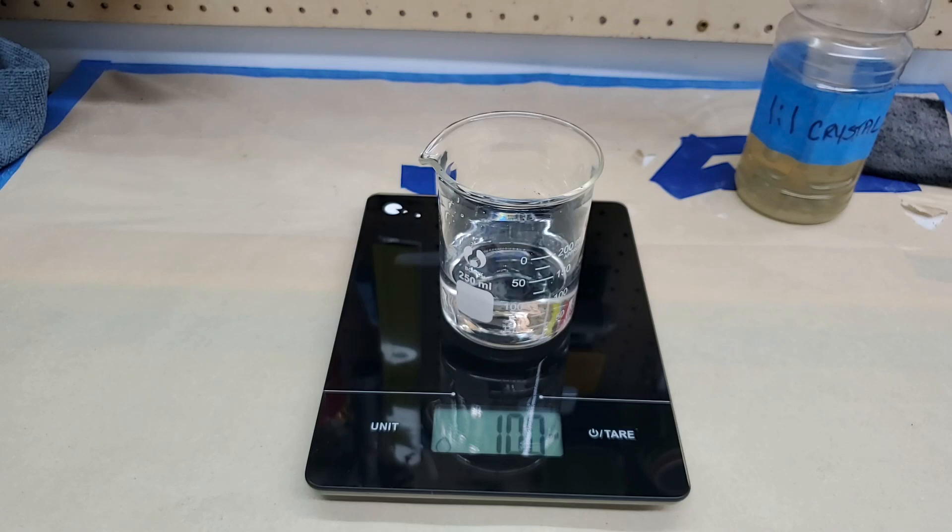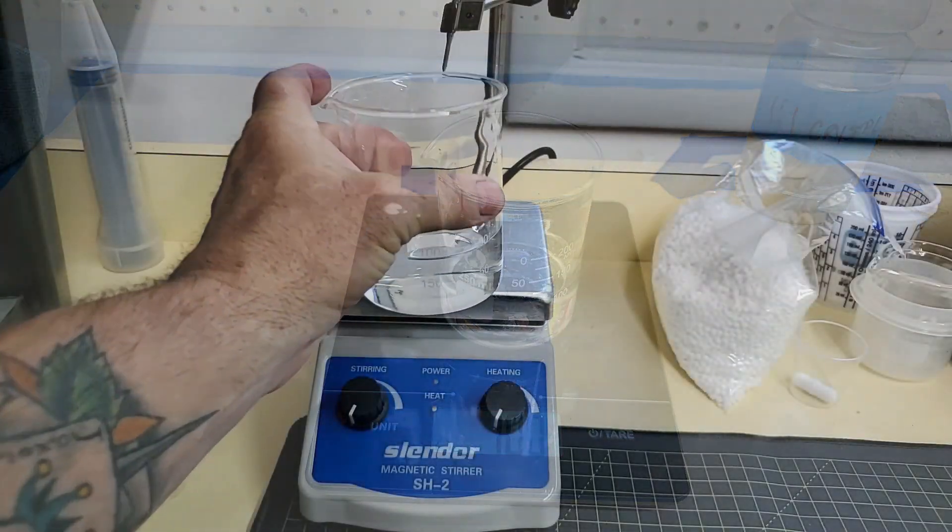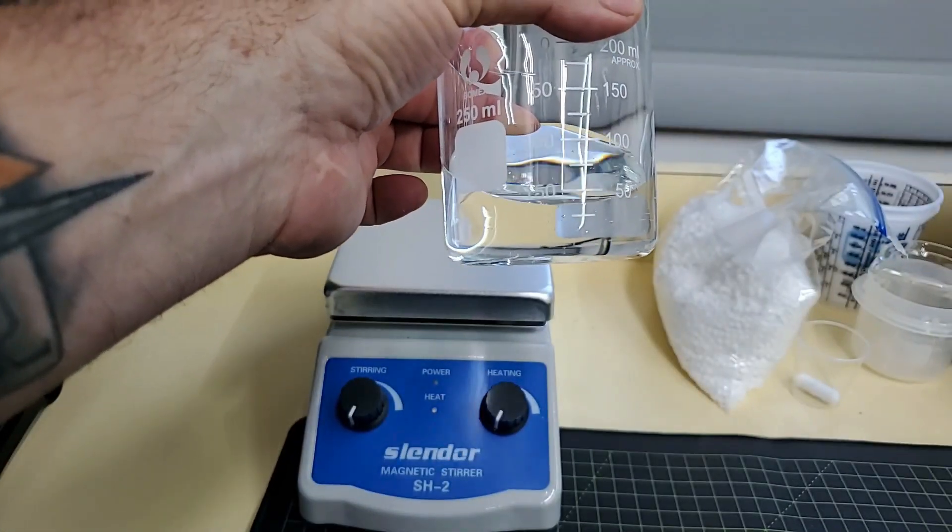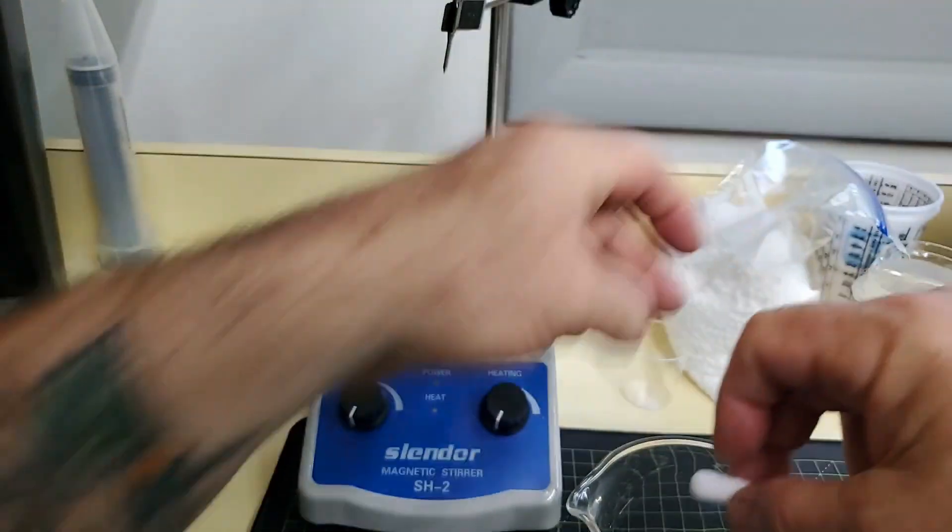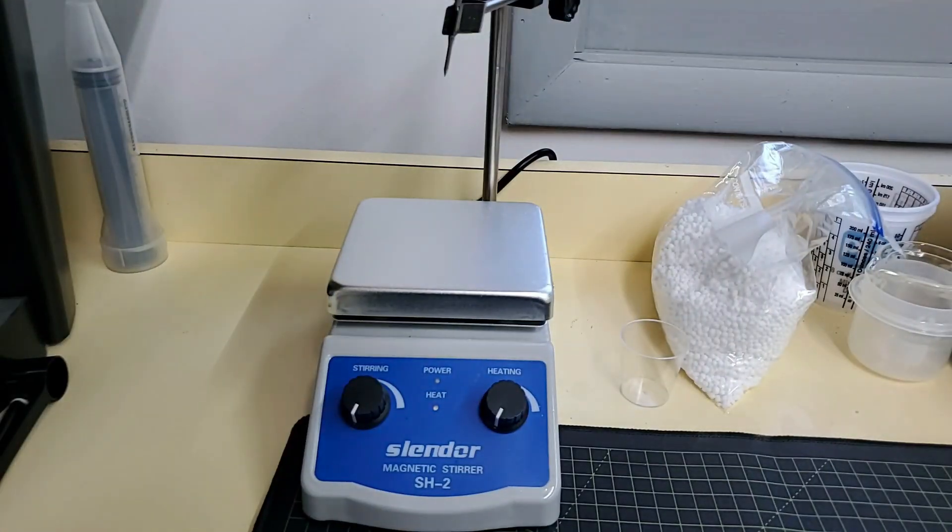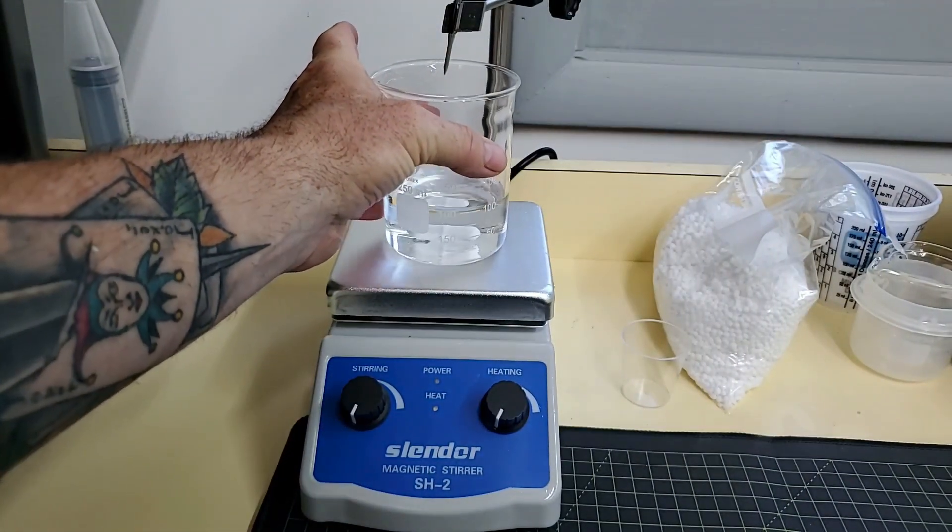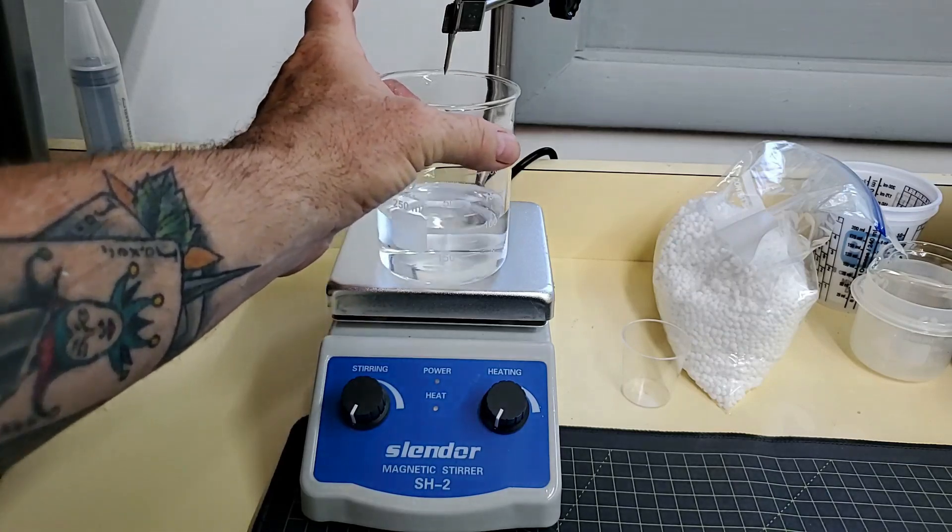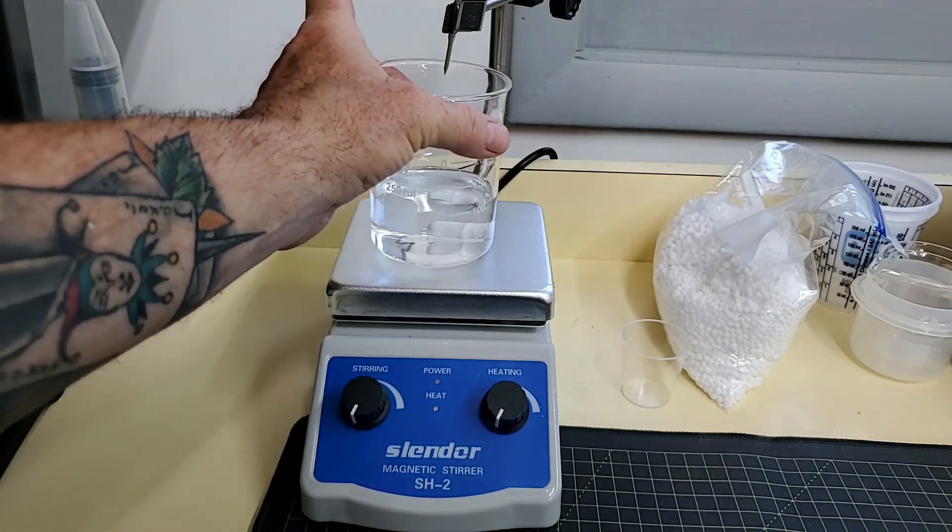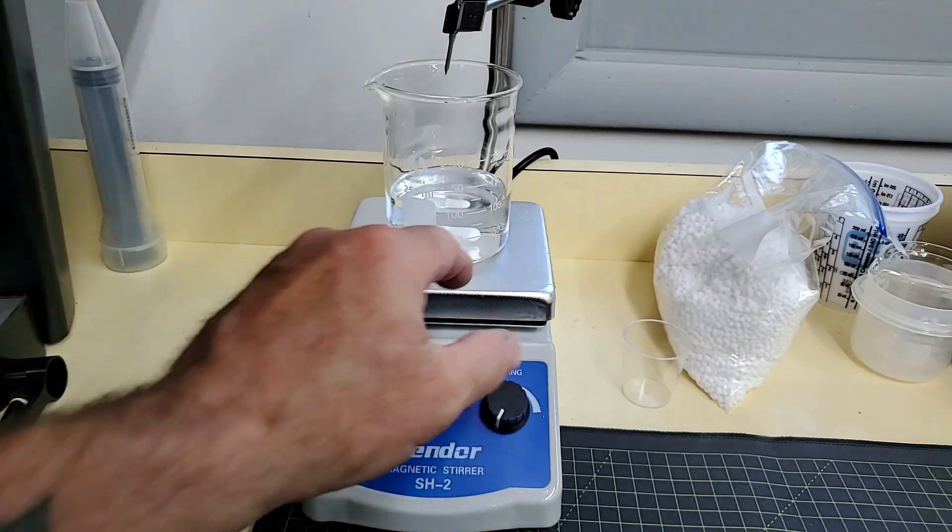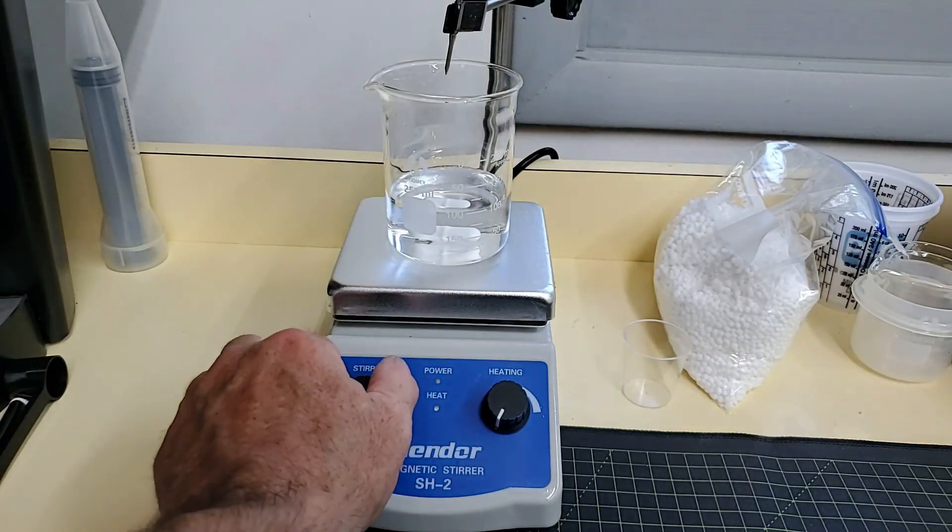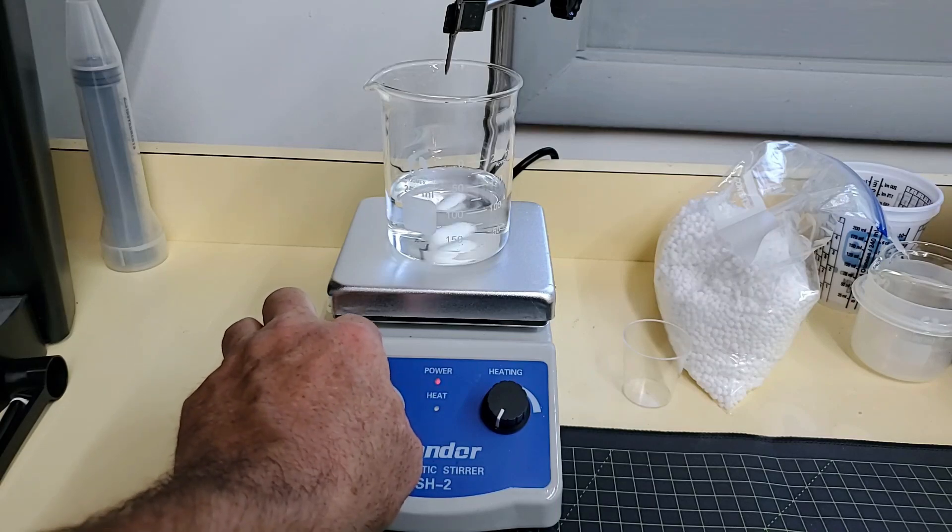So now we'll take you over to the magnetic stirrer and show you the heating and stirring process. We've got our container, glass container of water. What I'm going to do is drop this magnetic stirring pill in. And as you can see when we put it on there, there's a magnet underneath the plate that will activate that.